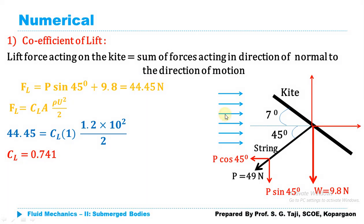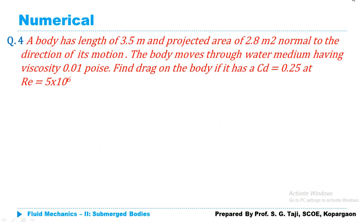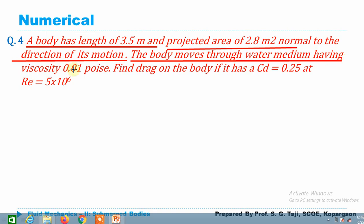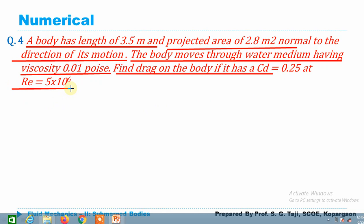Moving to the next numerical: a body has a length of 3.5 m and a projected area of 2.8 m² normal to the direction of its motion. The body moves through water with a viscosity of 0.01 poise. Find the drag on the body if CD = 0.25 at Reynolds number = 5 × 10⁶.